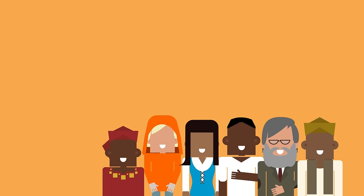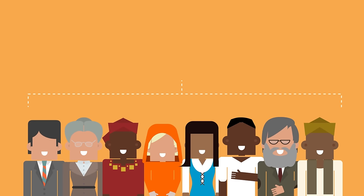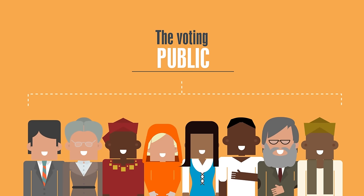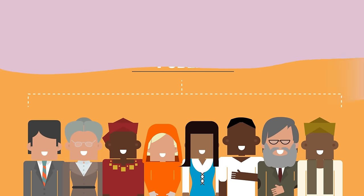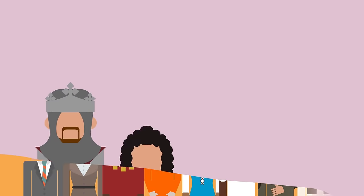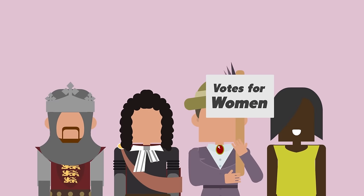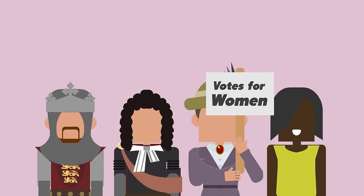In the UK we live in a democracy, which means power is in the hands of the people through our right to vote. Throughout history, lots of people in the UK have campaigned for the voting rights we have today.